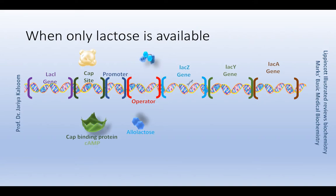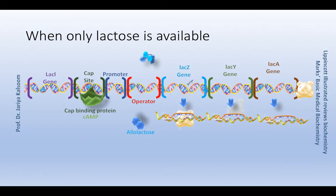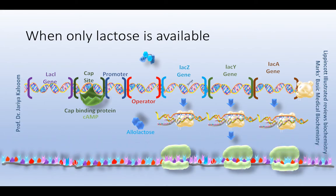When only lactose is available, the lac operon is induced, meaning it is maximally expressed or turned on. A small amount of lactose is converted to its isomer allolactose. This compound binds the repressor protein and changes its shape so that it cannot bind to the operator. In the absence of glucose, adenylyl cyclase is active and cyclic AMP is made, which binds to CAP protein. This cyclic AMP–CAP complex then binds the CAP site, causing RNA polymerase to start transcription of genes for metabolism of lactose with high efficiency. This is an example of positive regulation.